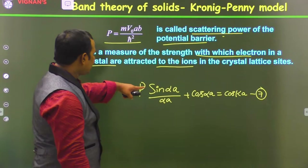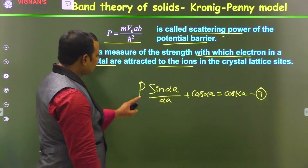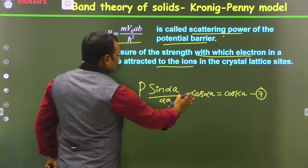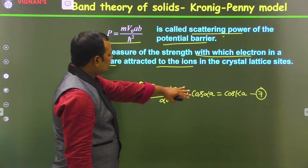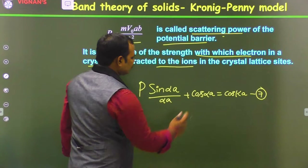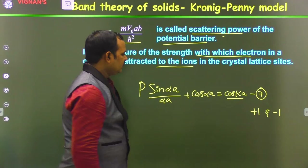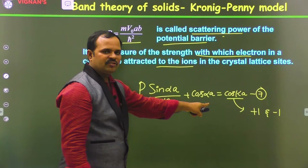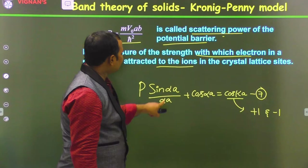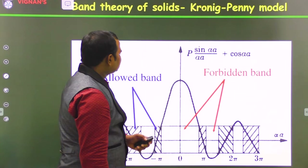Let us discuss more details and analysis of this equation. It consists of two parts: the left-hand side and the right-hand side. The equation is satisfied only when the left-hand side equals the right-hand side. Since the right side is cos ka — a cosine function — its maximum lies between +1 and −1. If we draw a graph of P·(sin αa / αa) + cos αa versus αa, we can identify the allowed regions.